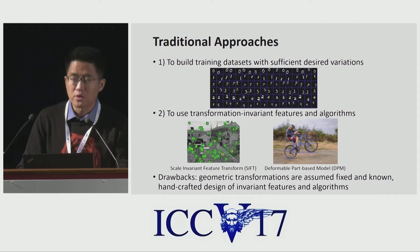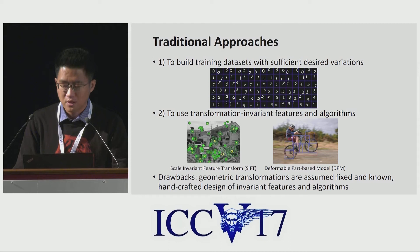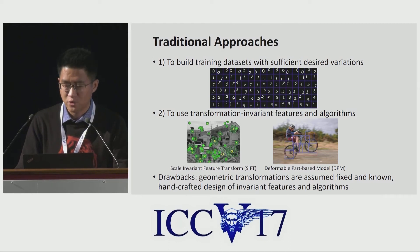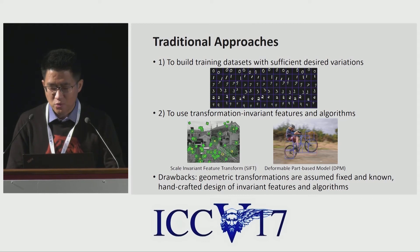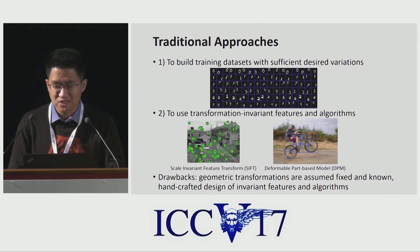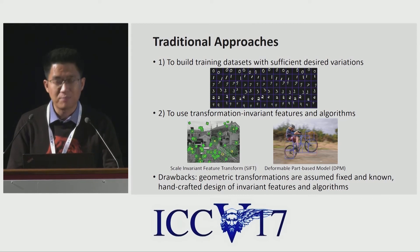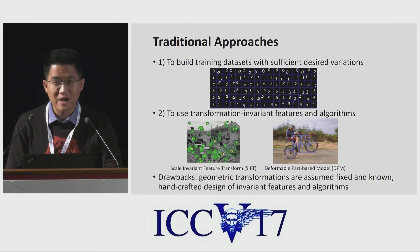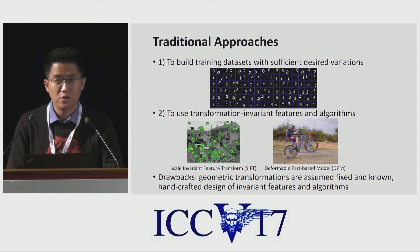In general, there are two ways for addressing this problem. The first is to build training datasets with sufficient desired transformations, realized by augmenting existing data samples, for example by affine transformation. The second is to use transformation-invariant features and algorithms. This category subsumes many well-known techniques, such as SIFT (scale-invariant feature transform) and sliding window-based object detection paradigms.